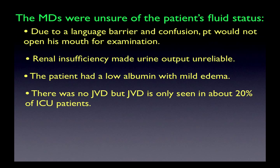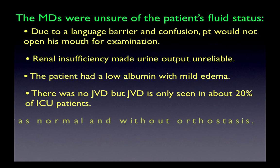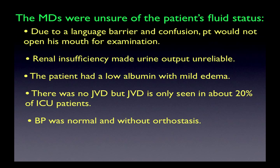There was also no jugular venous distension, but jugular venous distension is only seen in about 20% of patients in the intensive care unit. His blood pressure was normal and without orthostasis.